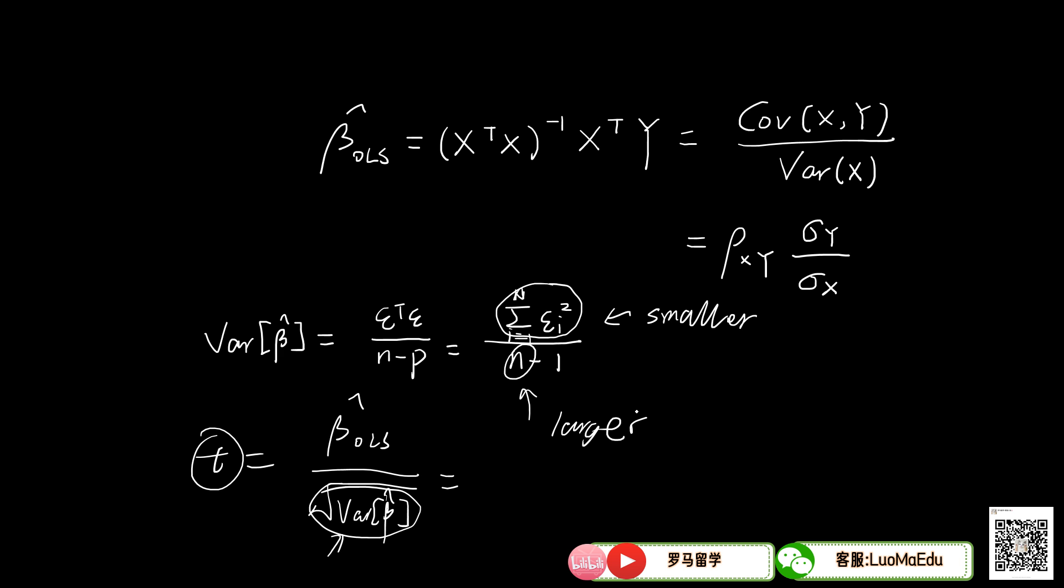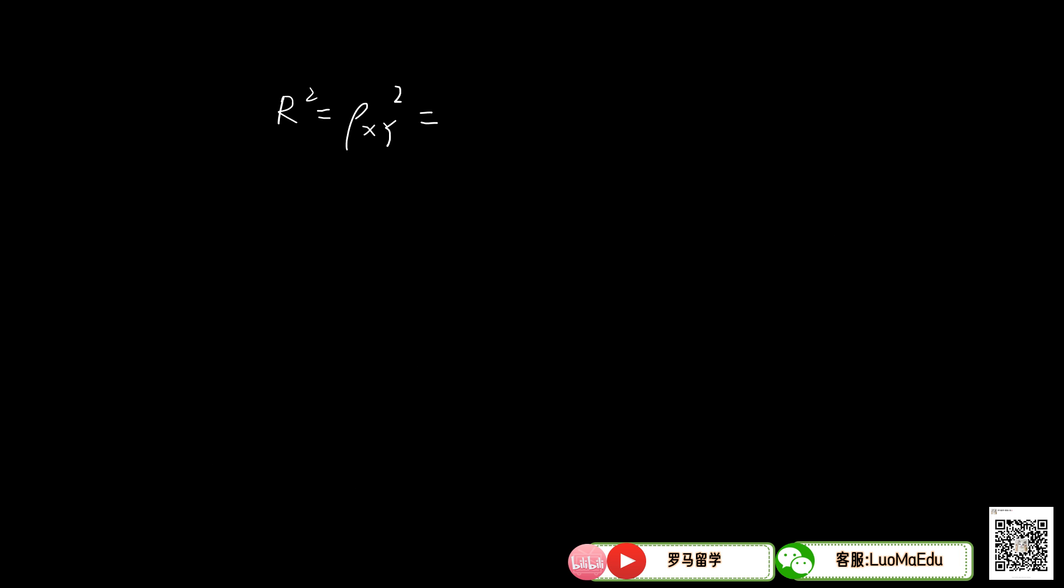So in this case, we can make beta hat significant. At the same time, we need to make the R-square very low, so we need to make the correlation between x and y close to zero. Let's say the correlation right now is 0.1, and 0.1 squared will equal only one basis point.